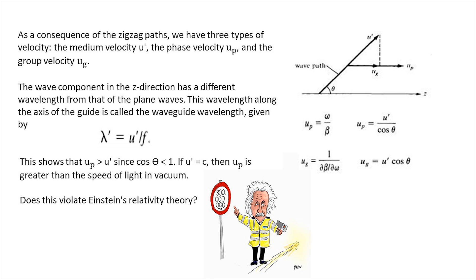This shows that phase velocity is greater than or equals to medium velocity, since cos theta is less than or equals to one. If medium velocity equals to speed of light, then phase velocity is greater than the speed of light in vacuum. Does this violate Einstein's relativity theory that messages cannot travel faster than the speed of light? Not really, because the information or energy in a waveguide generally does not travel at the phase velocity. Information travels at the group velocity which must be less than the speed of light.